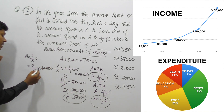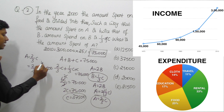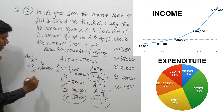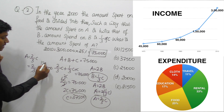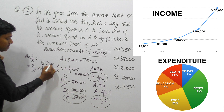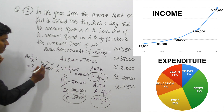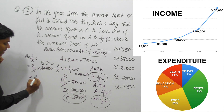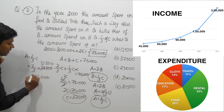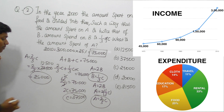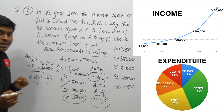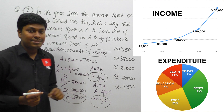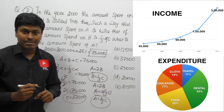We know A = 2/3 × C and C = 37,500. So A = 2/3 × 37,500 = 2 × 12,500 = 25,000. Finally, the amount spent on A is 25,000, which is option C.